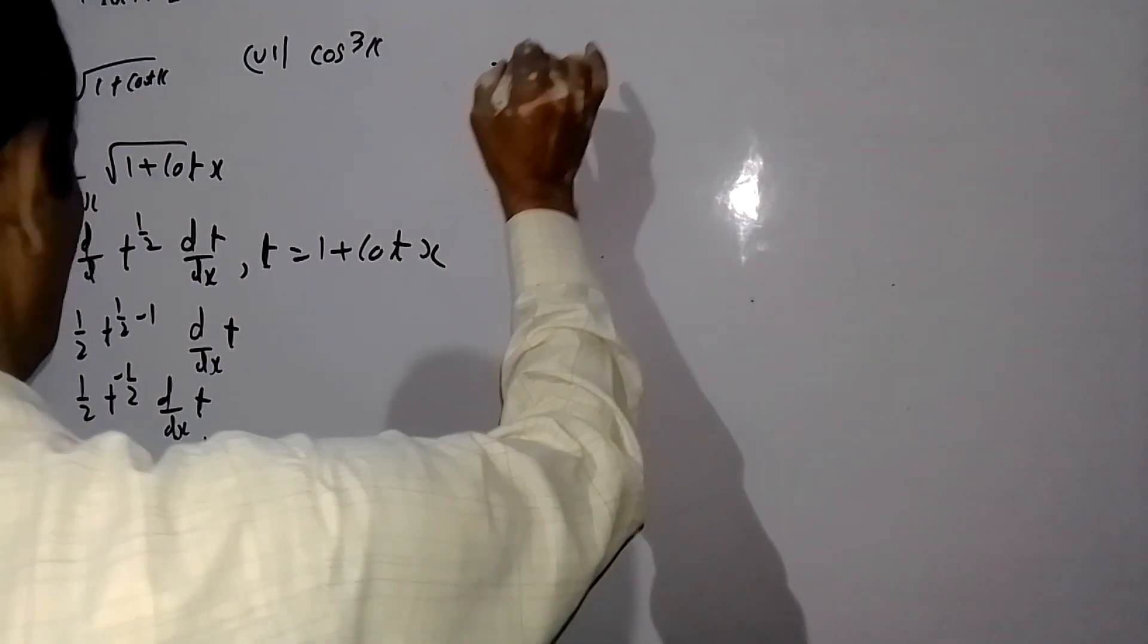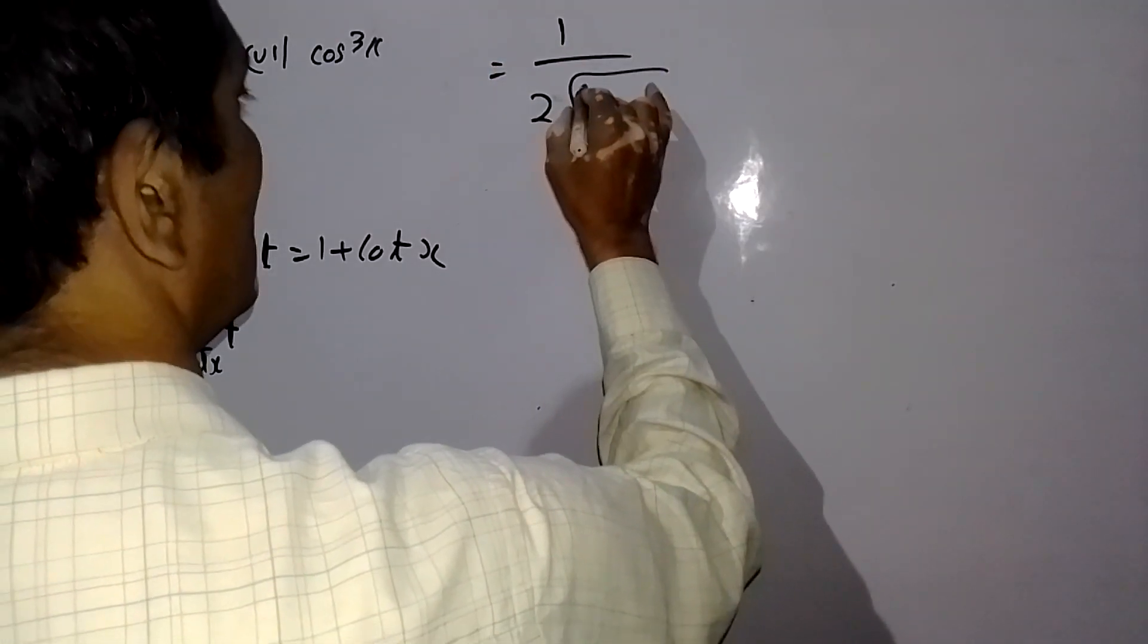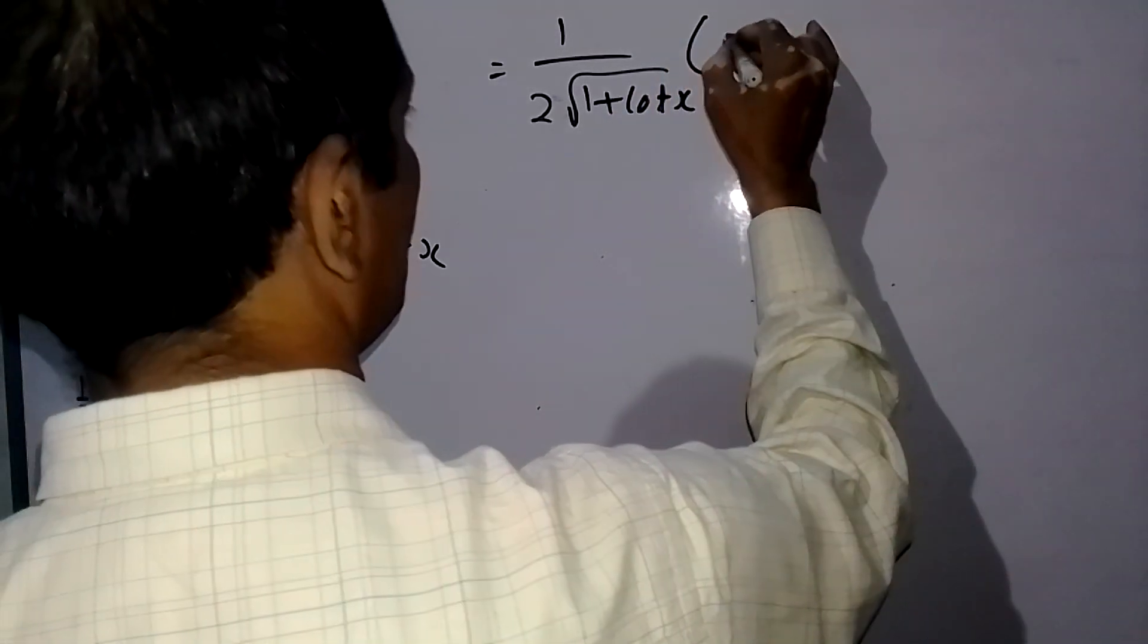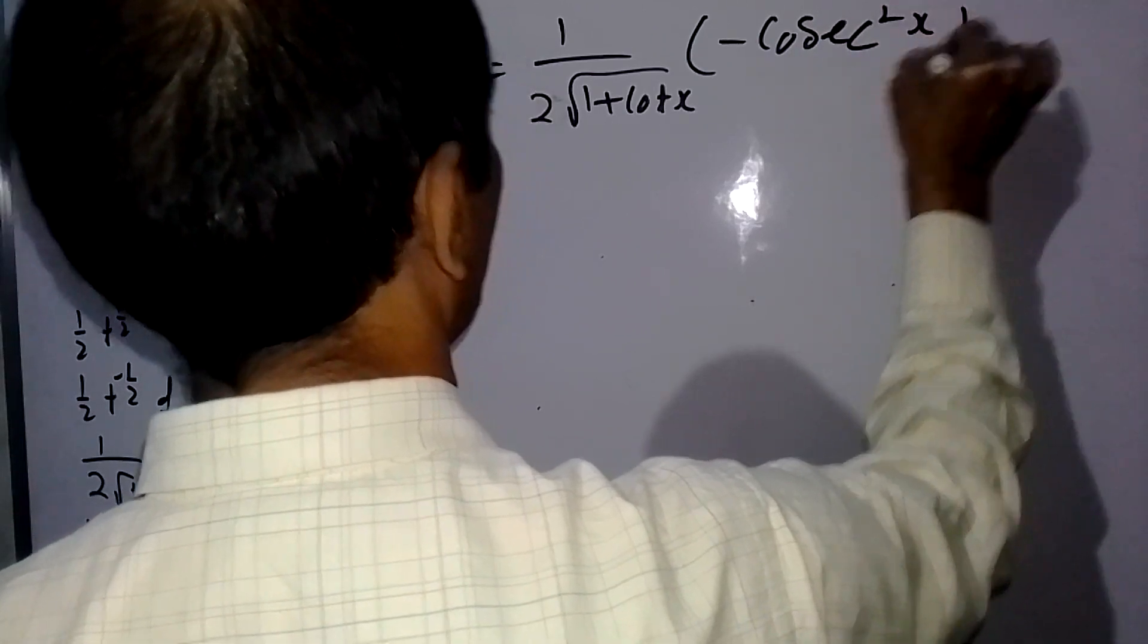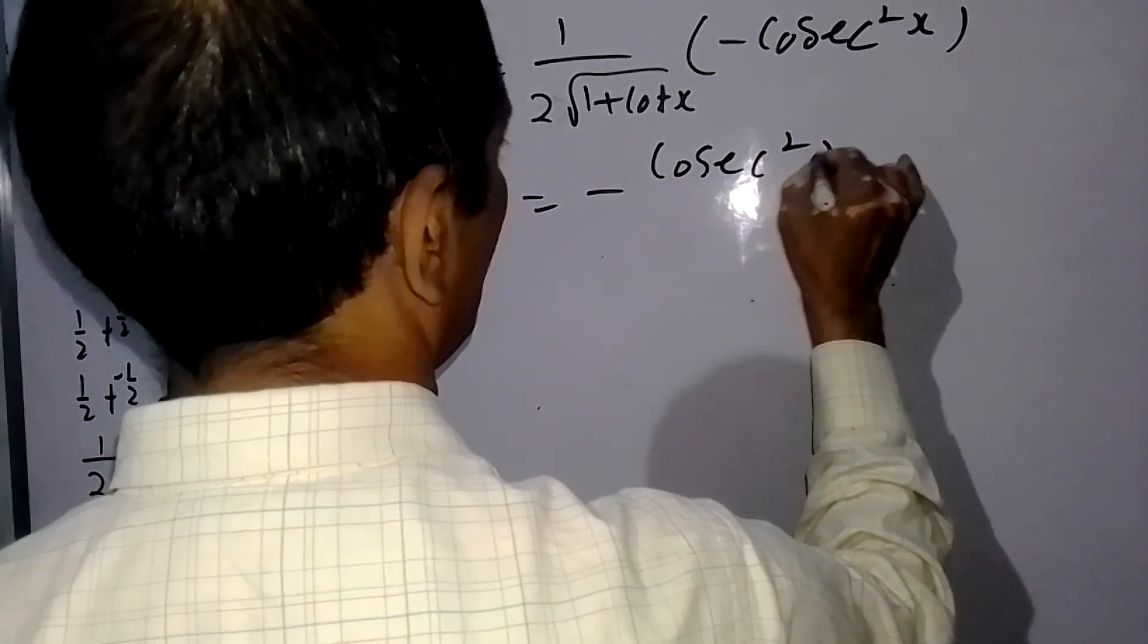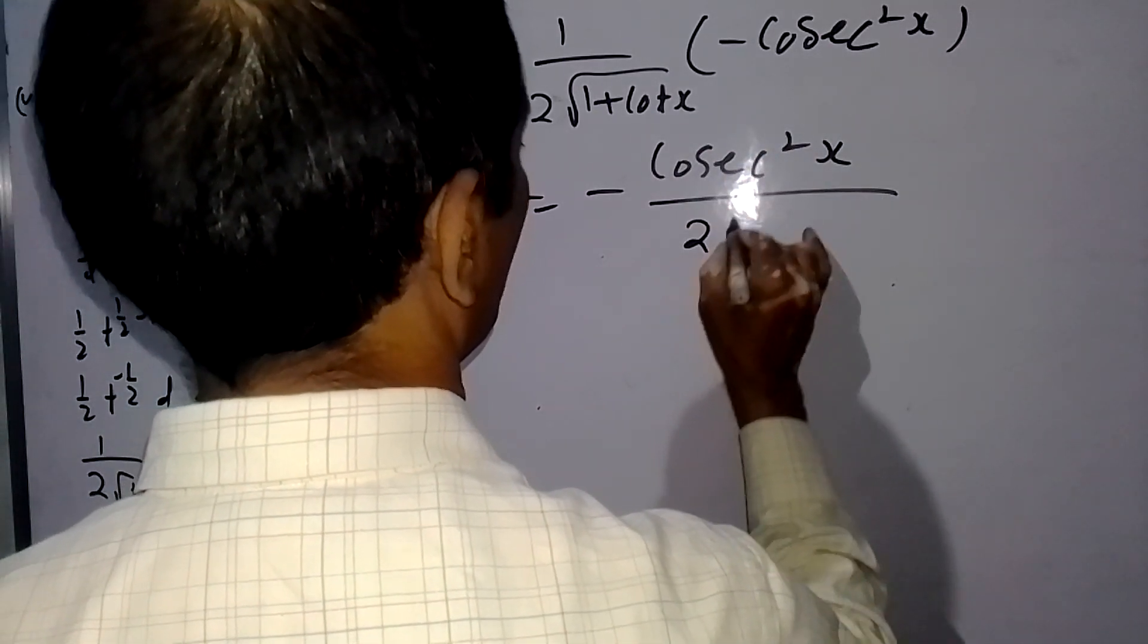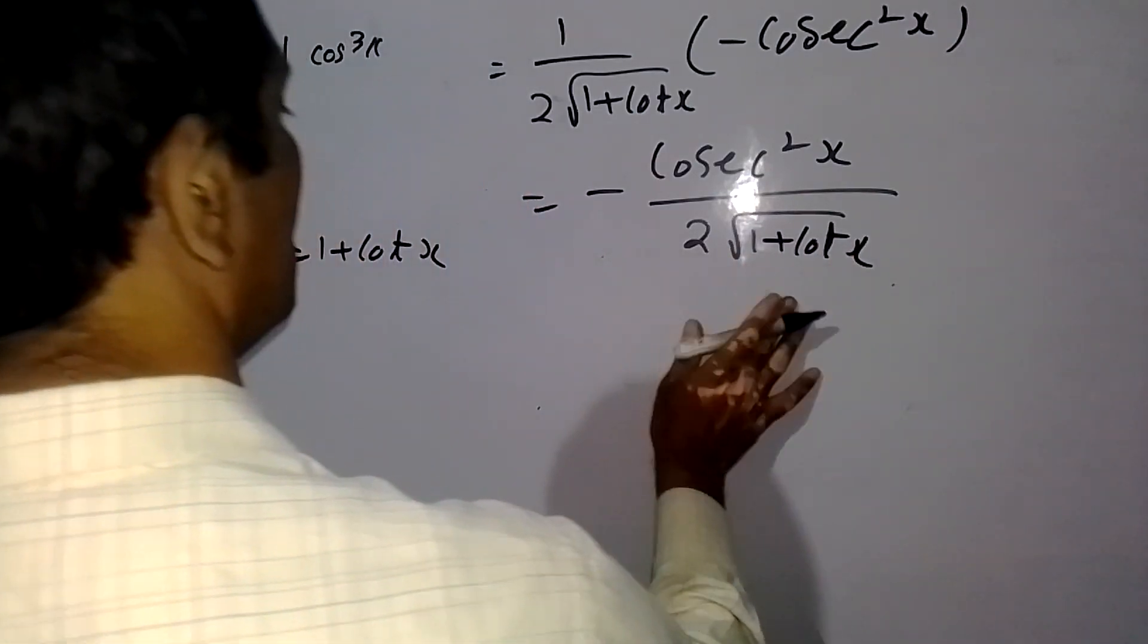T value is 1 upon 2 root 1 plus cotangent. This is minus cosecant square x. So minus cosecant square x upon 2 root 1 plus cotangent.